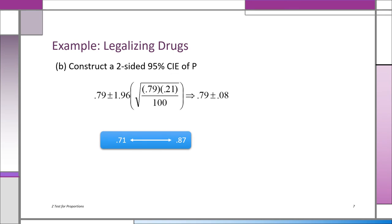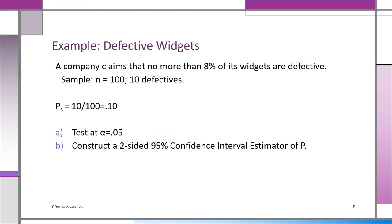Part B is to construct a two-sided 95% confidence interval estimator for the population proportion. The sample proportion 0.79 is smack in the middle, plus and minus the margin of error, which turns out to be 0.08. We end up with an interval from 0.71 to 0.87. We have 95% confidence that this interval contains the true population proportion of people in favor of legalizing drugs.